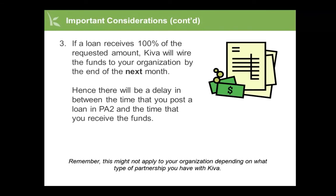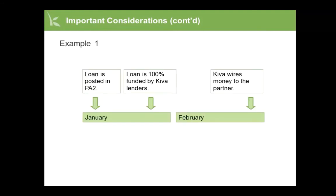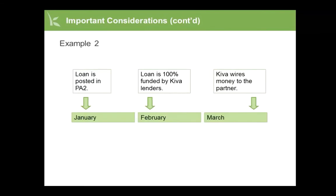If a loan receives 100% of the requested amount, Kiva will wire the funds to your organization by the end of the next month. Hence, there will be a delay between the time that you post a loan in PA2 and the time that you receive the funds. Here is a graphic that illustrates this timeline. In the first example, the loan is posted in PA2 in January and is fully funded within the same month; Kiva will wire the funds by the end of February. In the second example, the loan is posted in January but not fully funded until February; Kiva will not wire funds until the end of March. Note that funds are only transferred once per month through a net billing process. Refer to Lesson 3.1 for more information.